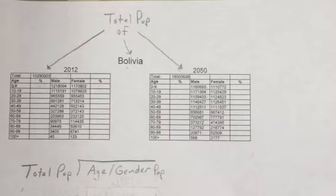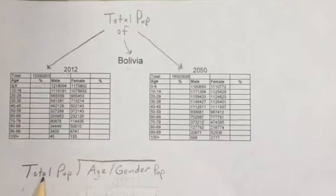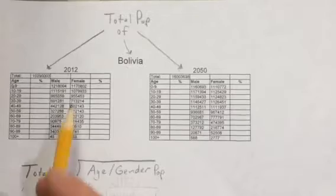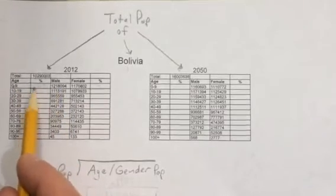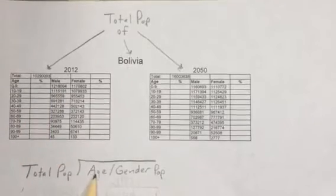You'll be able to do all the rest if I give you one example. We're going to take the total population here and divide it into the total male population for zero to nine. That's going to give us that percent.